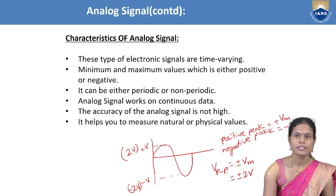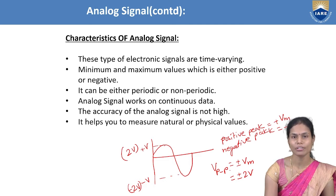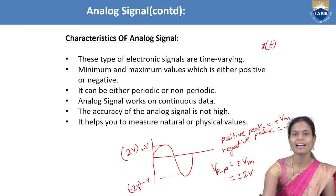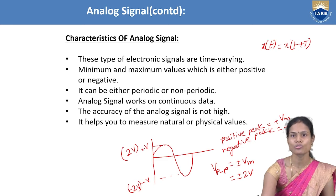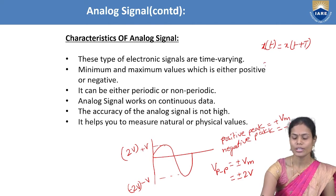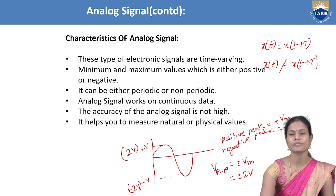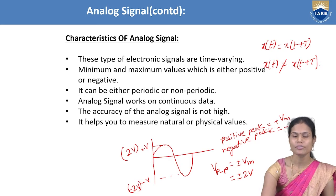Analog signals are available in periodic form as well as non-periodic form. Periodic form means the waveform repeats its pattern after one particular time period — that is, x(t) = x(t+T). In the non-periodic signal, the signal does not repeat its pattern, so x(t) ≠ x(t+T). Analog signals work on continuous type of data, continuously varying with time.